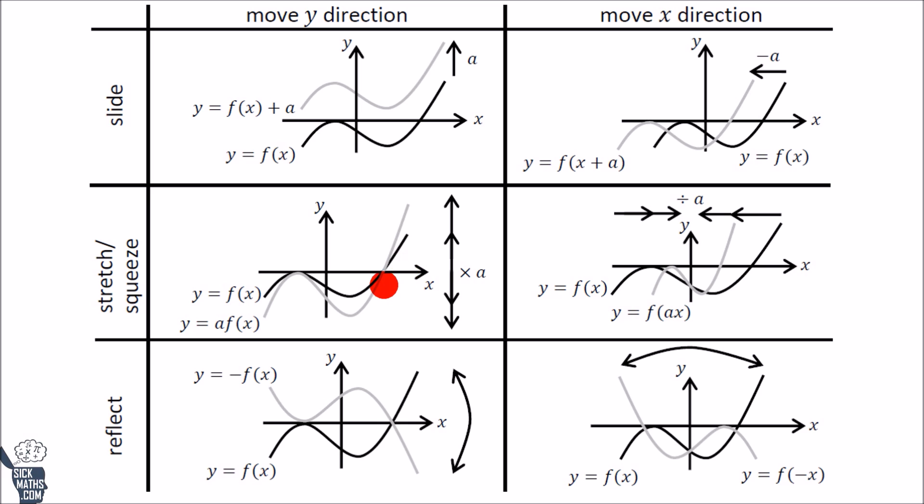Lastly, if you put a minus in front of the function, the y values are just going to be the opposite of what they were in the beginning. So it will basically flip the graph.